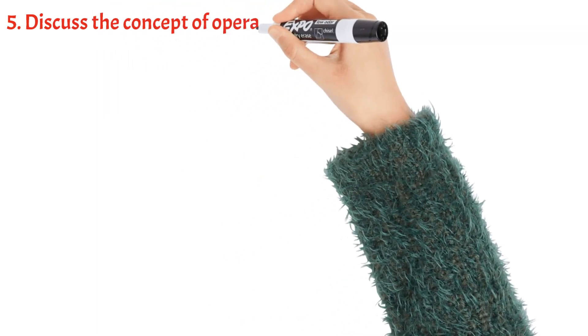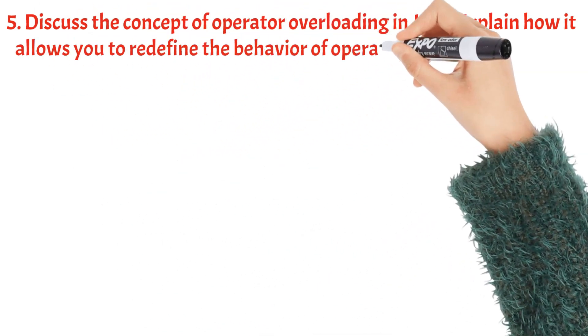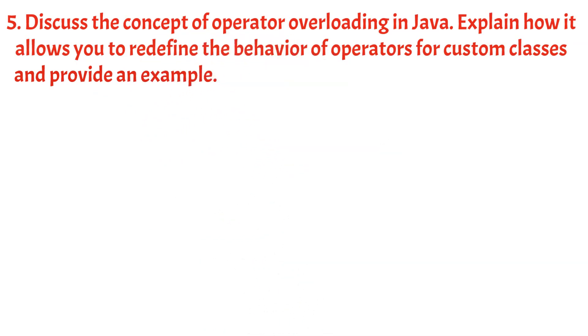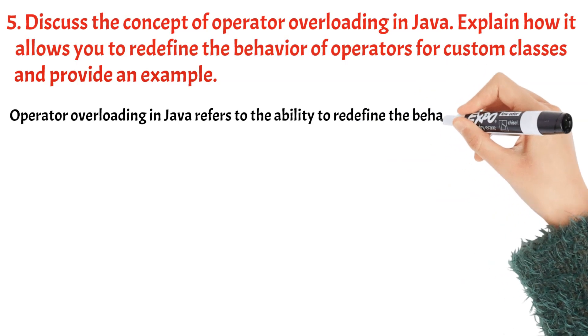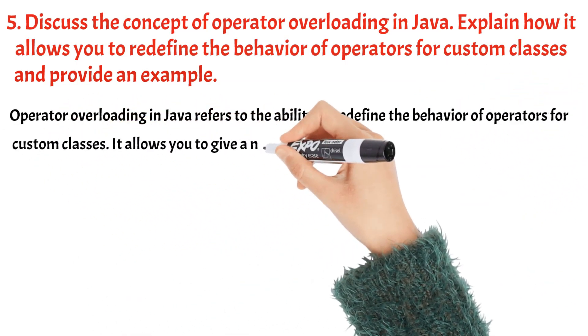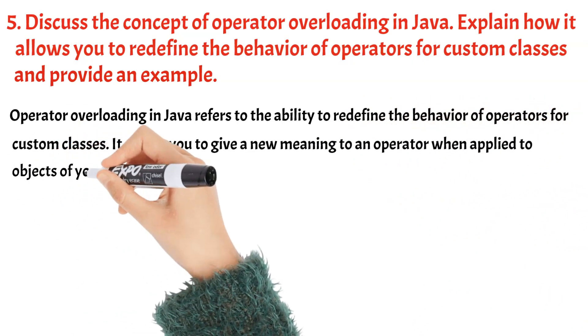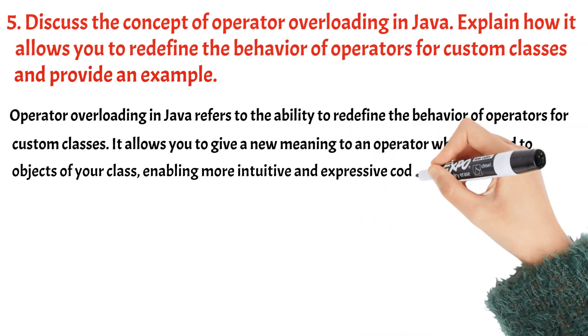Discuss the concept of operator overloading in Java. Explain how it allows you to redefine the behavior of operators for custom classes and provide an example. Operator overloading in Java refers to the ability to redefine the behavior of operators for custom classes. It allows you to give a new meaning to an operator when applied to objects of your class, enabling more intuitive and expressive code.